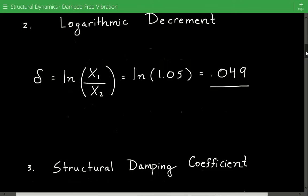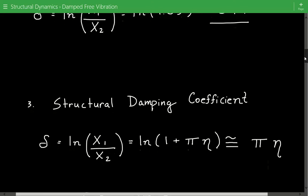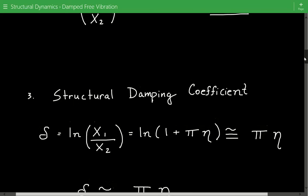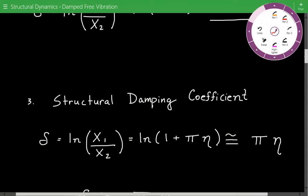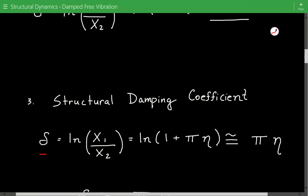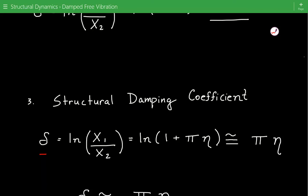After this we're going to calculate the structural damping coefficient. We're going to use this relationship that the logarithmic decrement delta is equal to the natural log of the successive amplitude, and that's equal to the natural log of 1 plus pi times eta. Eta is the structural damping coefficient.